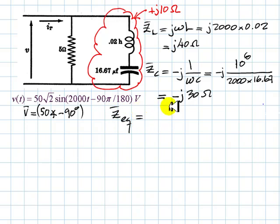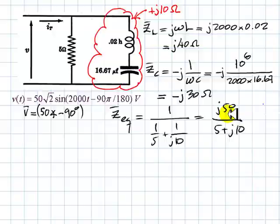will be the inverse of the sum of the inverses of 5 and j 10. Or if we can use some other formulas that we remember from second year, we say that is just 5 times j 10, that is j 50 divided by the sum of 5 plus j 10.